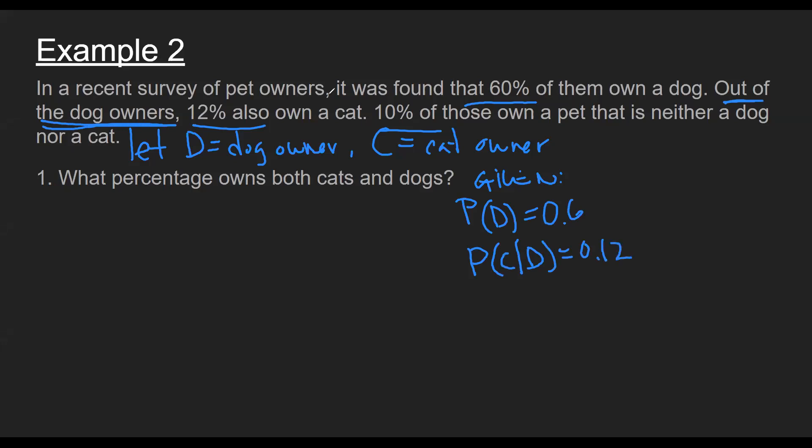So there's the superscript C for complement. And at the same time, they do not own a dog. So my advice is to do this, is to label the given information in terms of probability notation. This will allow you to simply find a formula or rule that allows us to substitute numbers into.